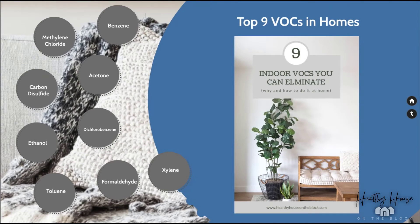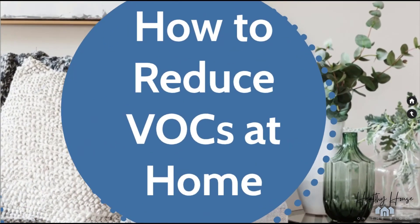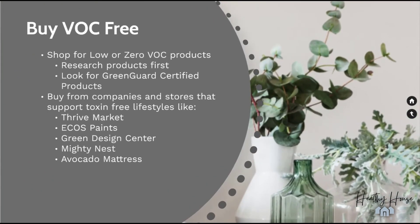So let's wrap up with how to reduce VOCs in your home. There are four simple ways to minimize VOC exposure. First, buy VOC free: be educated and do your research before you buy. You can get low-VOC or zero-VOC products. Many paints, varnishes, and sealers have VOC emissions labeled right on the can. You can also look for GREENGUARD certified products, or shop at stores and brands that support a healthier lifestyle — such as Thrive Market, ECOS Paints, Green Design Center, Mighty Nest, and Avocado Mattress.